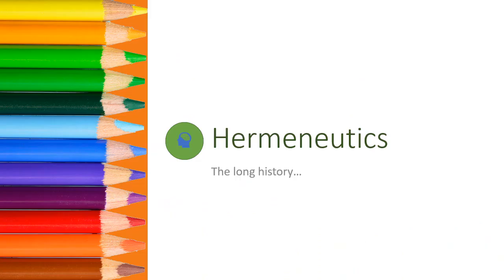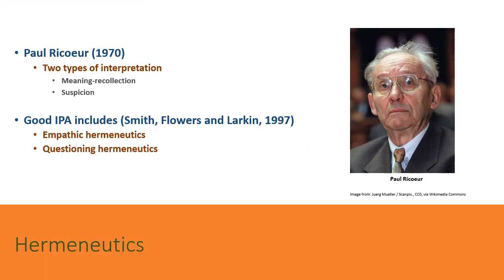Now we are going to explore hermeneutics, or the theory of interpretation. Ricoeur distinguished between two kinds of interpretation. Meaning recollection involves presenting findings that are faithful to the accounts and meanings presented by participants. The second form, suspicion, is the more critical and questioning analysis of these accounts, aiming to uncover unspoken meaning that may exist below the surface account provided by a participant. This approach to interpretation uses outside theoretical perspectives in order to shed light on the phenomena. Meaning recollection is going back to the insider's perspective and trying to see what it's like from the participants' view and stand in their shoes.